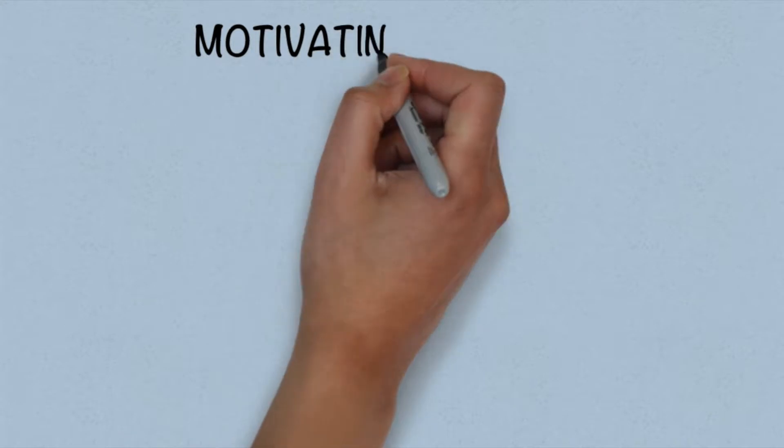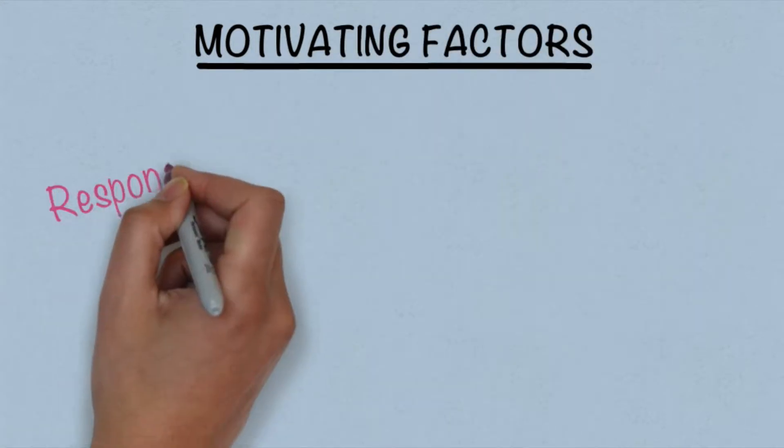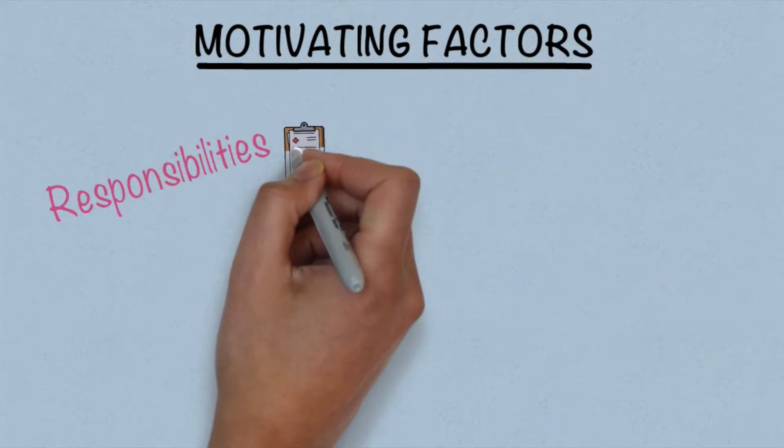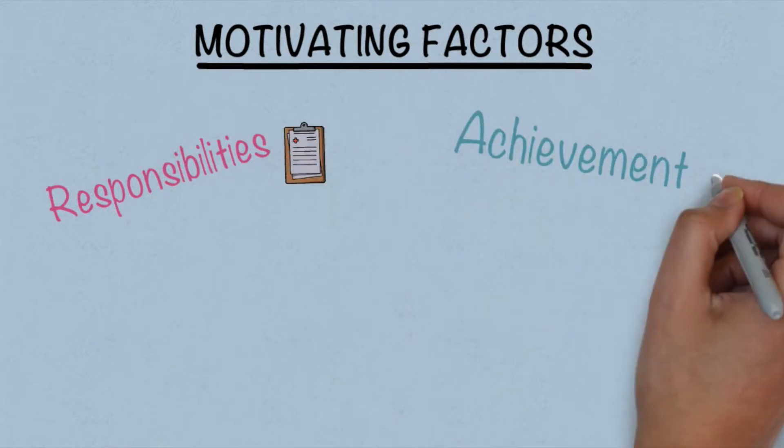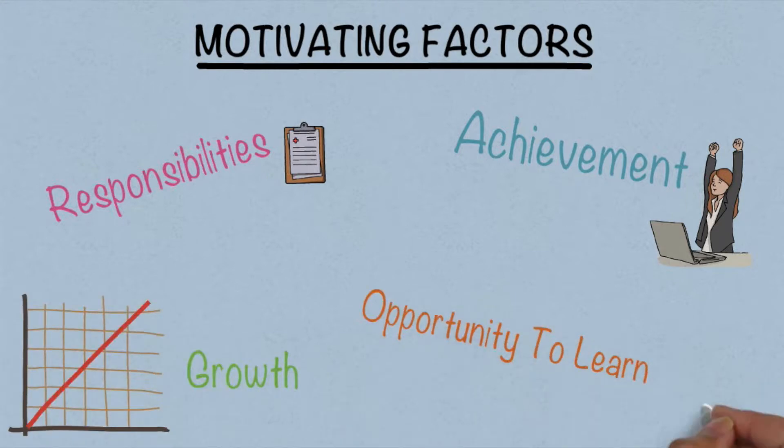Motivating factors can be depicted as factors within the job itself that cause the employee to work harder. Examples of motivating factors are responsibility, achievement, growth, and the opportunity to learn - basically things that provide an element of satisfaction. This could be comparable to Maslow's hierarchy theory and the psychological needs.